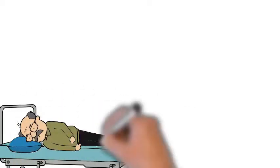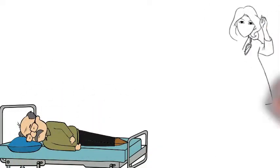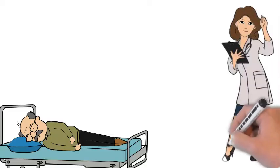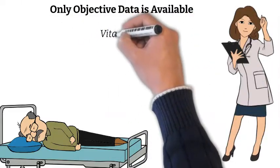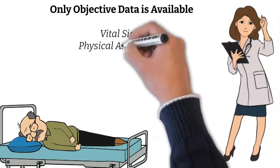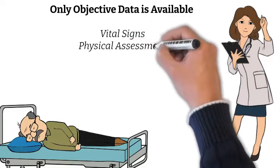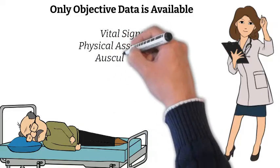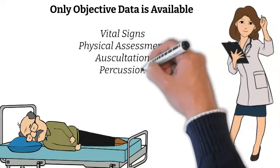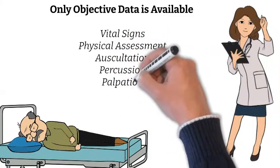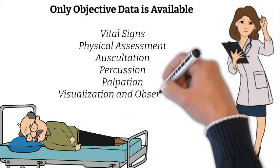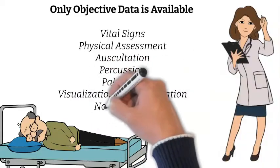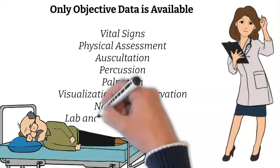If, for whatever reason, a patient is unable to communicate with you, only objective data is available. These can include things like vital signs, physical assessment, auscultation, percussion, palpation, visualization and observation, any notable odors, and lab and diagnostic testing results.